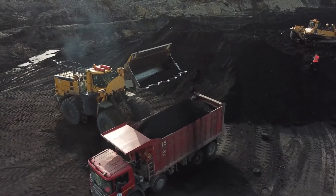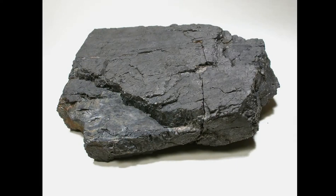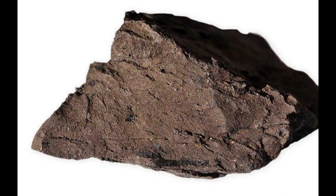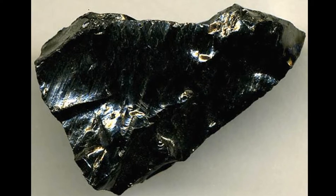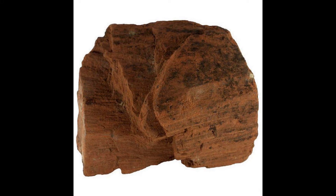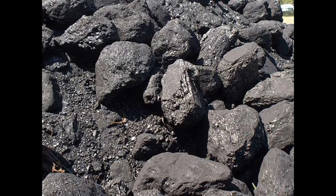The major types of coal are anthracite, bituminous and lignite coal. Anthracite has a higher carbon concentration and is the hardest type of coal. Lignite has a high concentration of oxygen and hydrogen but a low concentration of carbon. Bituminous is a moderate form of coal.